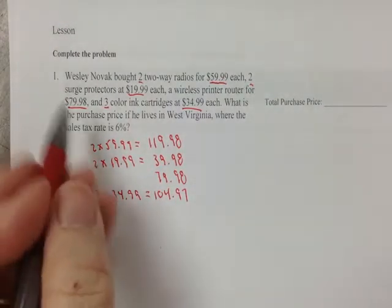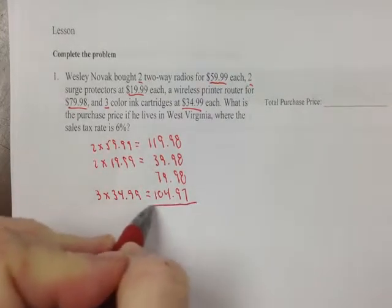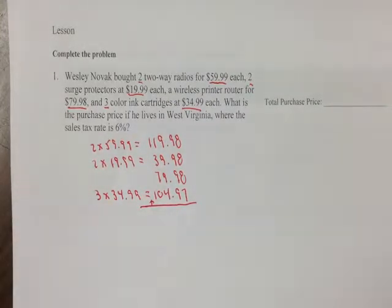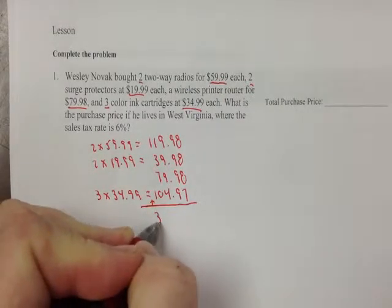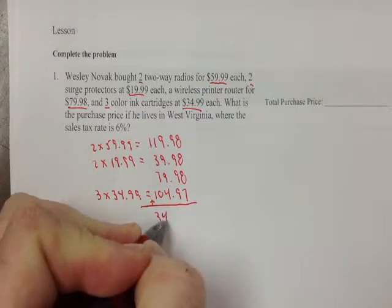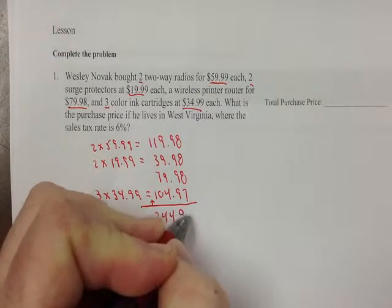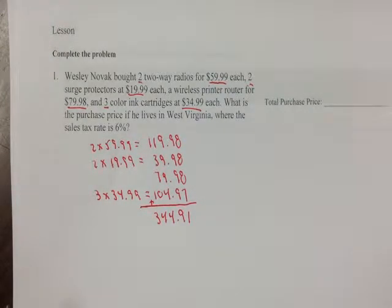Okay, so that is the total amount of sale. I'm going to figure it out by adding them all together: $119.98, plus $39.98, plus $79.98, plus $104.97. We come up with $344.91 as your total purchase price — the total amount that you spent.